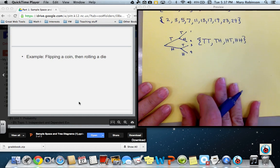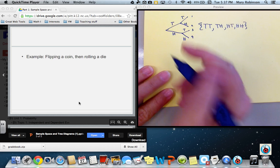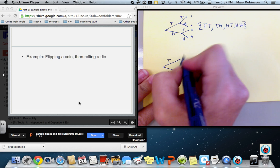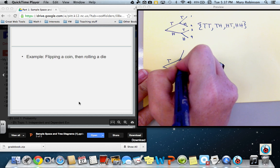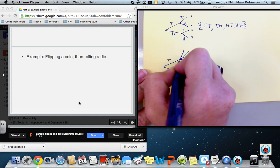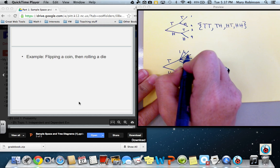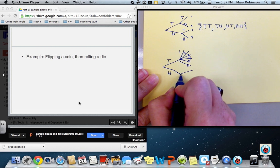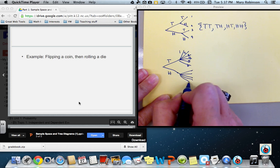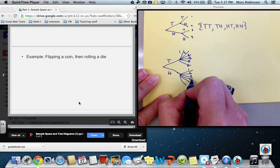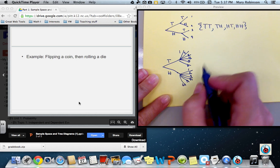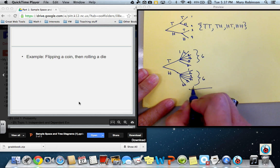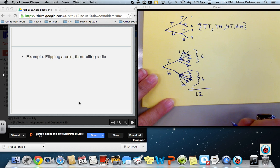If we flip a coin, then roll a die, the first event has two possible outcomes. Again, tails or heads. Then with rolling a die, we could roll a 1, 2, 3, 4, 5, or 6. Since there are six branches here and six branches here, if we add those together, we have 12 possible outcomes.